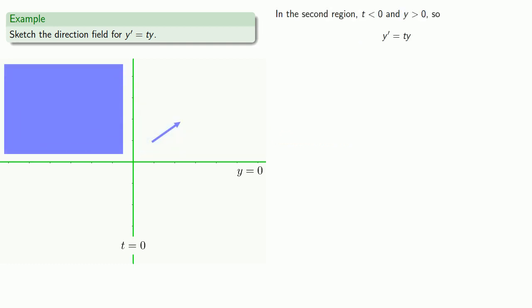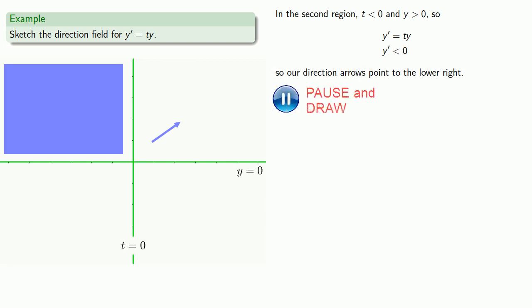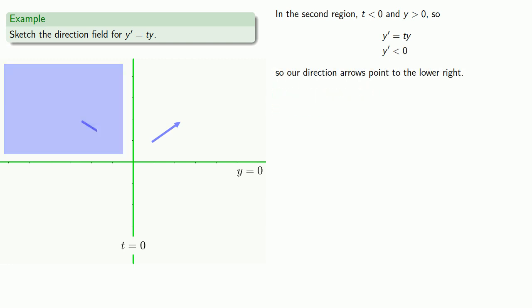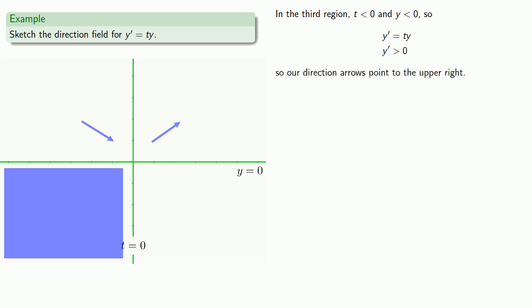In the second region, t is less than 0 and y is greater than 0, so our derivative is going to be less than 0, and so our direction arrows will point to the lower right. In the third region, t and y are both negative, so y' will be positive, and our direction arrow will point to the upper right.